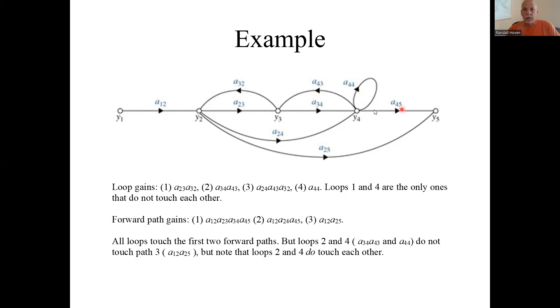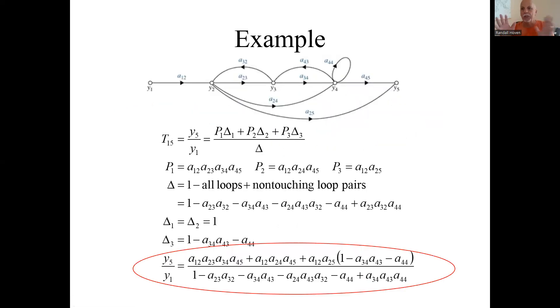You get three forward paths: one straight across, one coming down the middle here and over, and then the one coming all the way down. The first two of those paths touch all four loops. This bottom path does not touch this loop or that. So that's what happens. Those are what's touching and what's not touching.